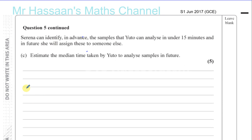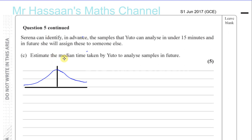We have our normal curve. What they've told us here is something to maybe throw you off a bit — they've told us about the median time and not the mean time. Now, it doesn't actually make any difference. They could have said the median time, the mean time, or even the mode time, because the mean, mode, and median are all the same when we're dealing with a normal distribution. Normally distributed data is symmetrical, so the mean, mode, and median will all be the same. So you can treat it just like the mean.